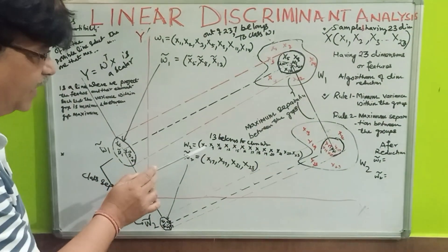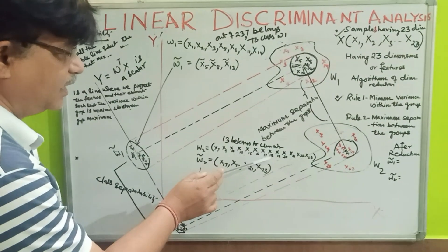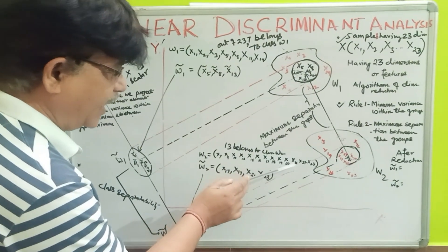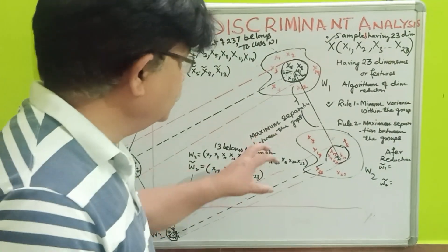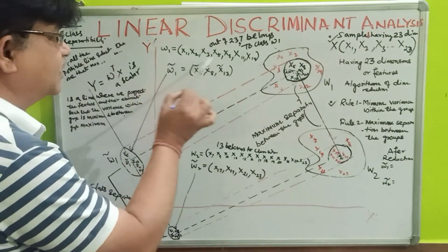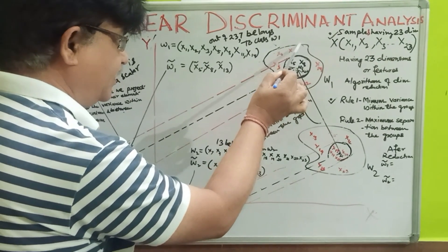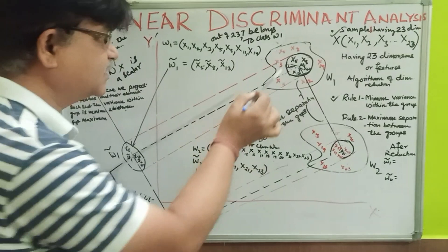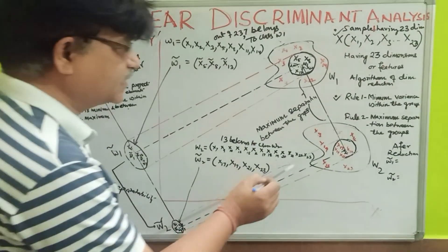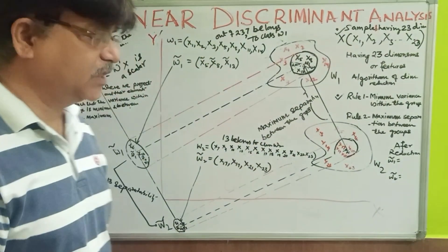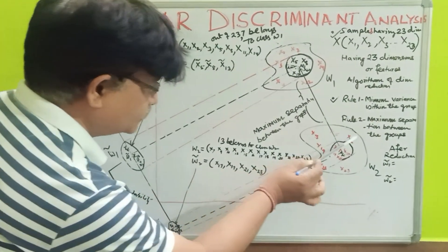And this W2 contains X17, X19, X20, X21, X22, and X23. Right. So, now, the representation of this whole set of samples is I am doing by drawing this curve. This curve contains all the features of group W1. And this curve, W2, this another set of class which contains W2 numbers, that is, 13 samples over here.